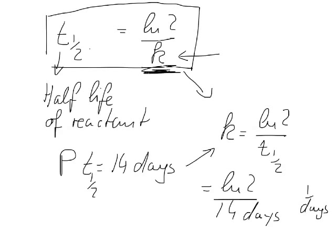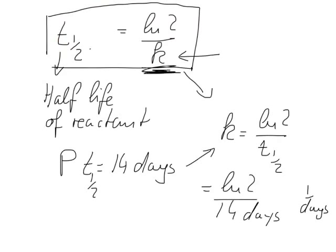So the half-life and the rate constant are directly interconvertible using this equation. This only holds true for a first-order reaction — half-lives don't make any sense for any other kind of reaction. So only use this equation for a first-order reaction.